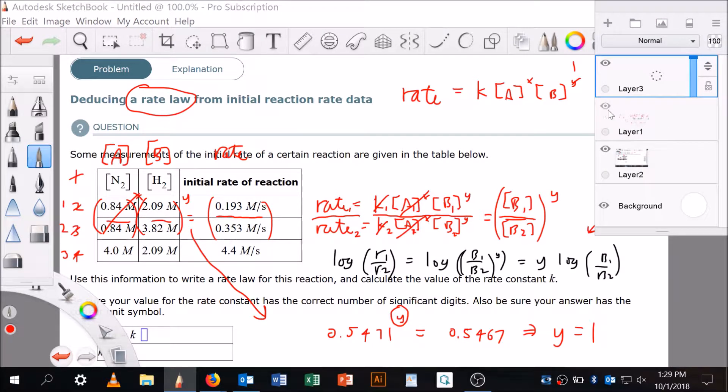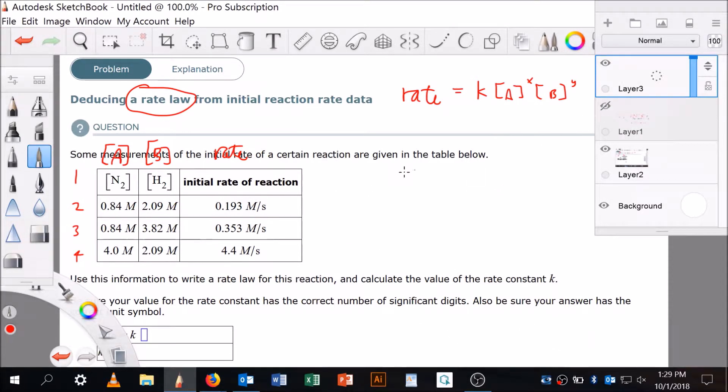Let's do the same with X. I'm going to compare these two trials where B does not change. I'm going to pretend like I don't see trial two. This fraction (0.84/4.0) raised to the X gives me 0.193 over 4.4.